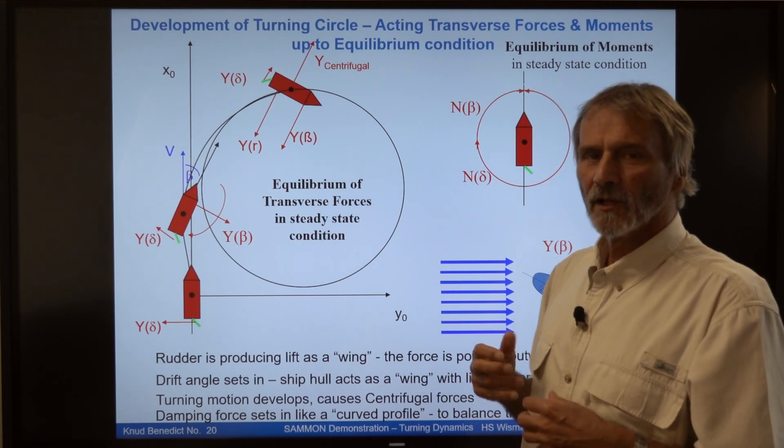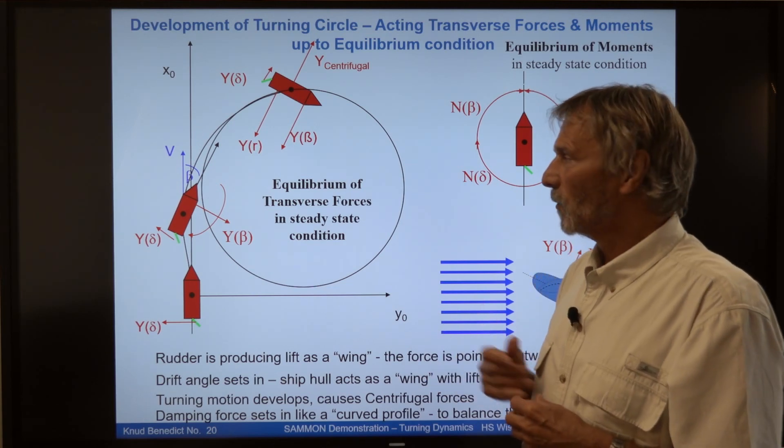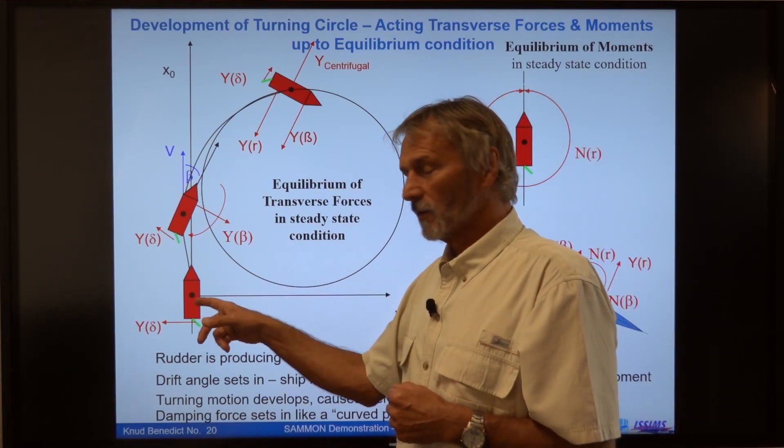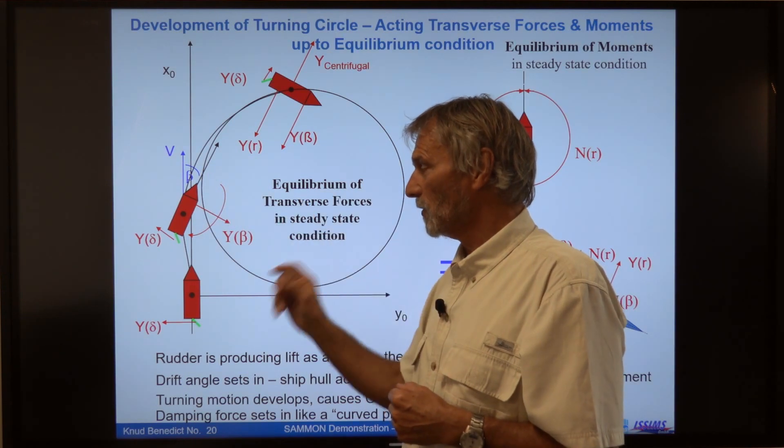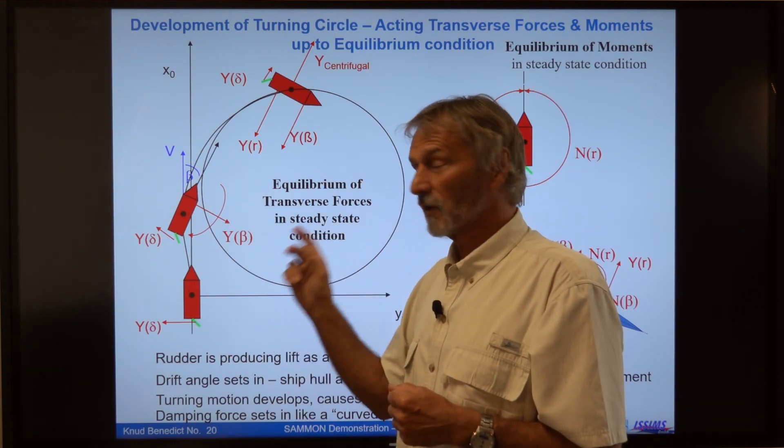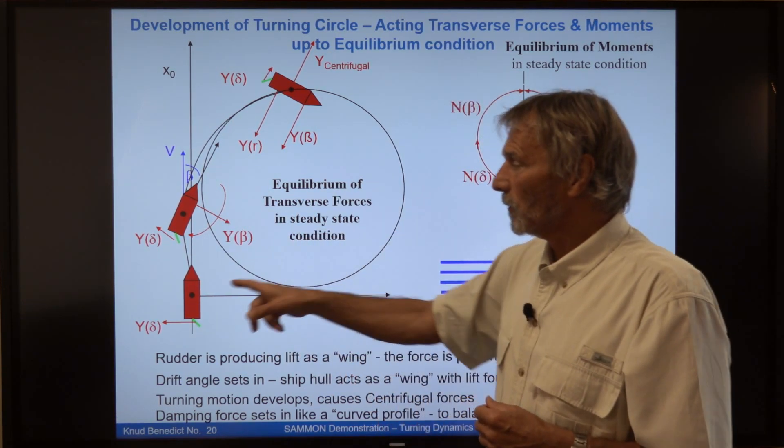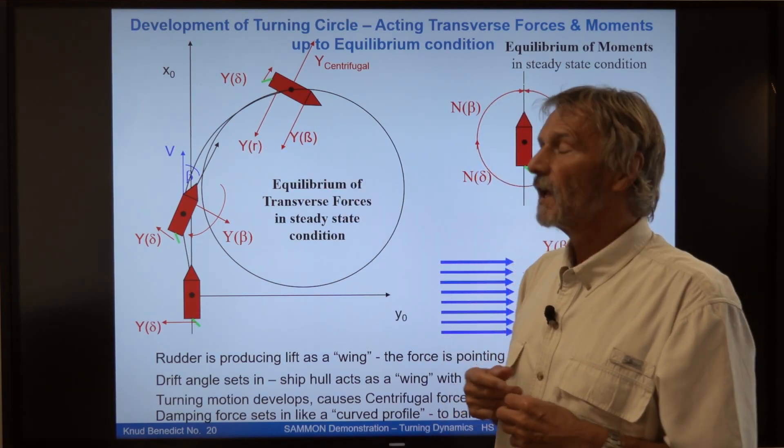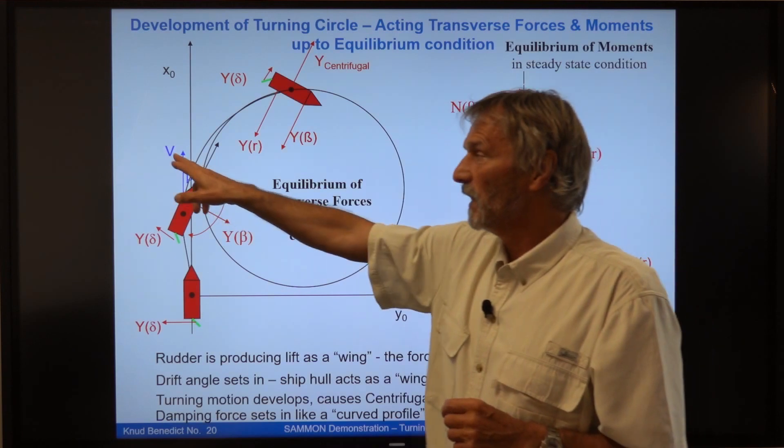Then, a proper speed. What effect has the speed? Is it a difference if we go with that slow ahead in the turning circle or we go with full ahead in the turning circle? All of the forces here are depending on the speed and all of them with v squared.